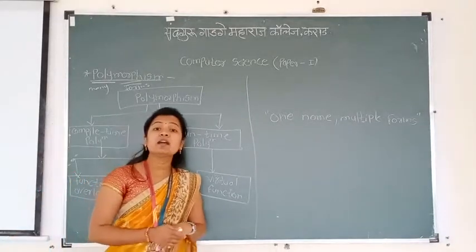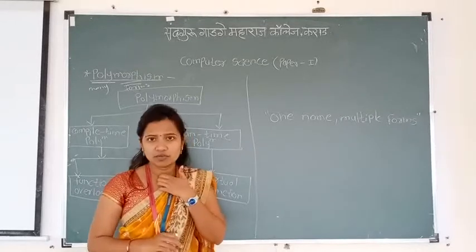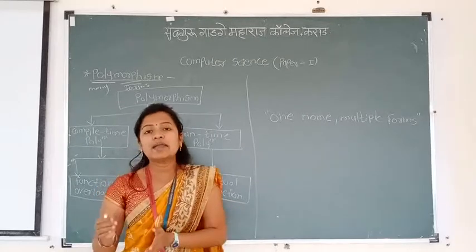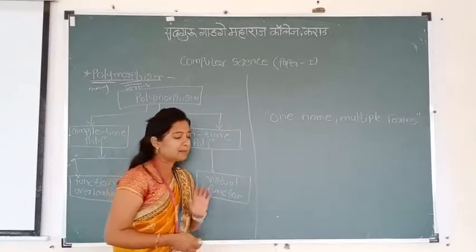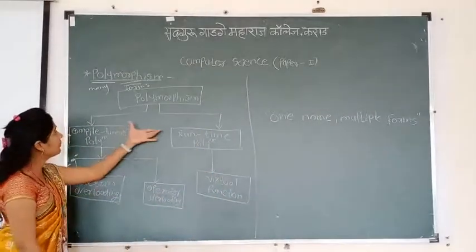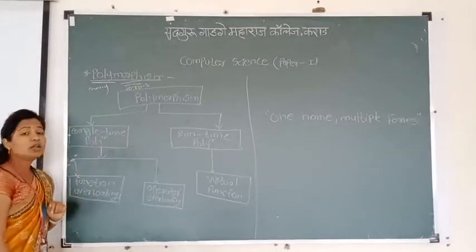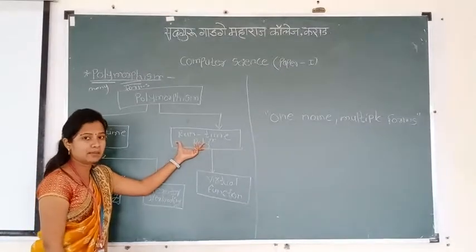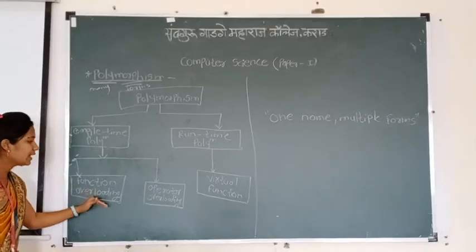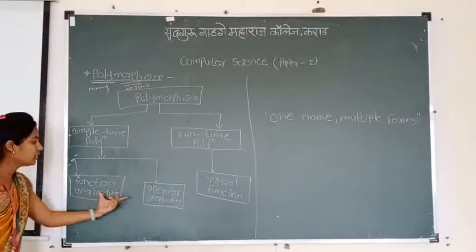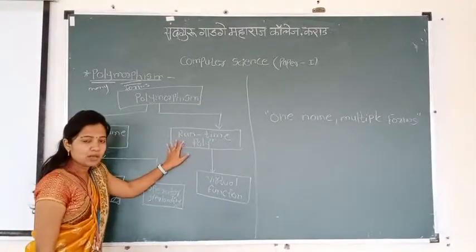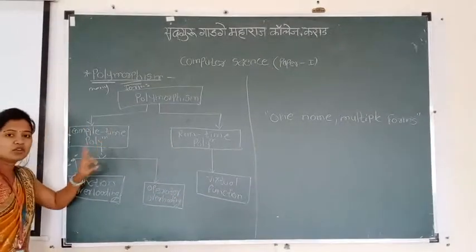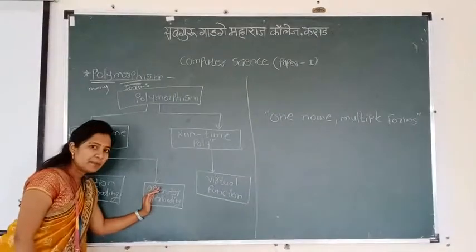Now, explain runtime polymorphism and compile time polymorphism. Looking at the diagram, polymorphism has two types: compile time polymorphism and runtime polymorphism. Compile time polymorphism is further derived by two ways: function overloading and operator overloading. Runtime polymorphism uses one concept: virtual function.